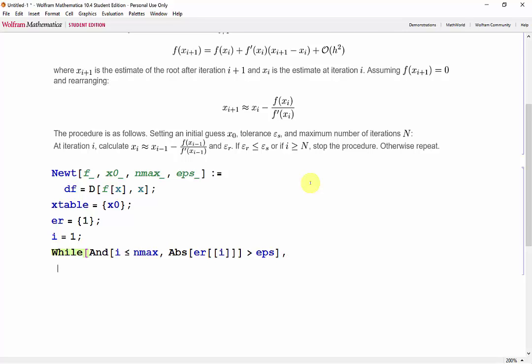We know that a new estimate requires the current estimate, the function evaluated at the current estimate, and the derivative evaluated at the current estimate. We can use square brackets to evaluate the function, but we need a rule to evaluate the derivative. So x_new equals x table of i minus the function evaluated at x table of i divided by the derivative evaluated at the x table of i.